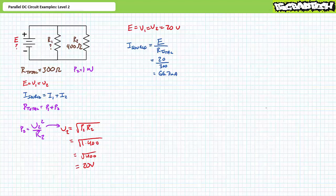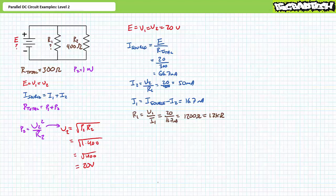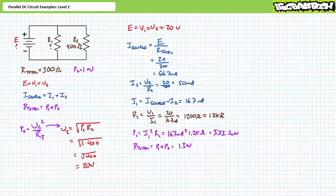I2 equals V2 over R2, yielding 50 milliamps. An algebraic rearrangement of the KCL equation gives I1 equals I_source minus I2, yielding the remaining 16.7 milliamps. R1 equals V1 over I1, yielding 1.2 kilohms. P1 equals I1 squared times R1, yielding 333.3 milliwatts. Total power equals P1 plus P2, yielding roughly 1.3 watts. As a check, total power also equals supply voltage times source current, similarly yielding 1.3 watts — confirming our answers are correct.